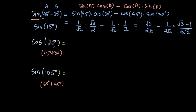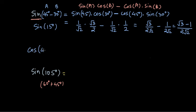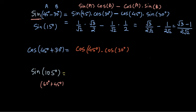Now let's solve for cos of 75 degrees. Writing 75 degrees as 45 plus 30, we compute cos(45° + 30°). The formula for cosine of a sum of angles is: cos of the first angle times cos of the other angle, minus sine of the first angle times sine of the other angle. Notice the sign reverses — when it's cosine, a plus between angles becomes a minus in the formula.